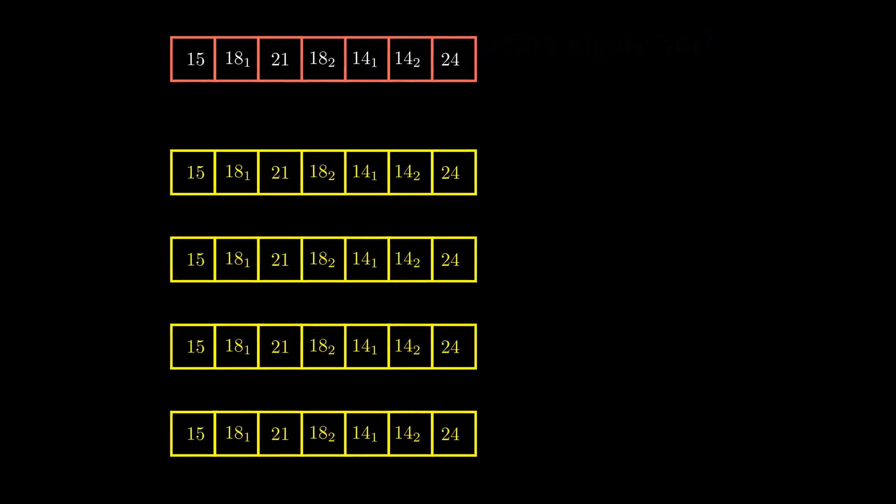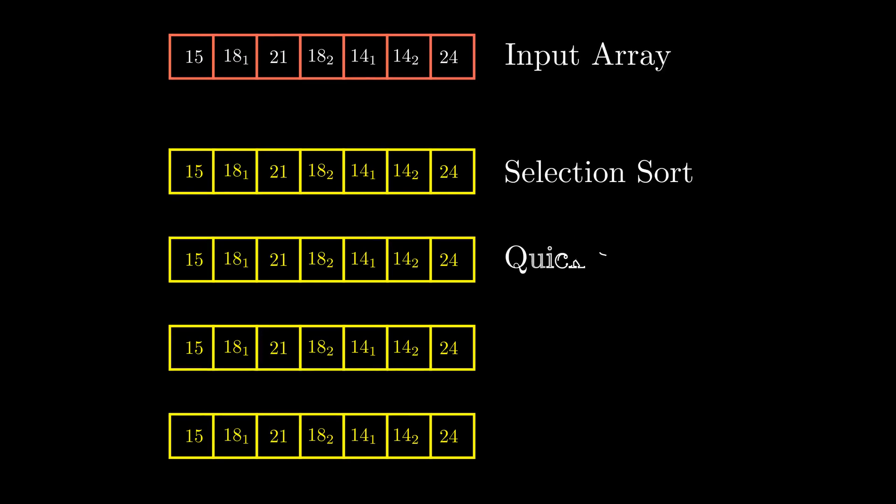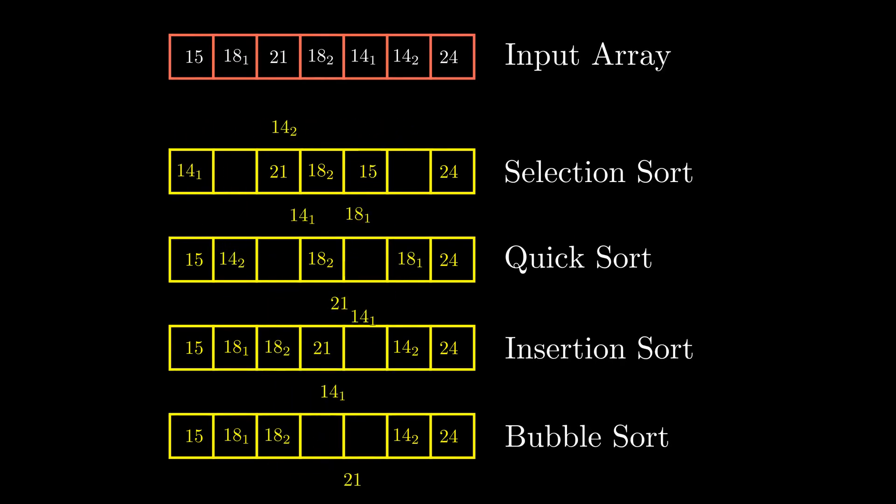To distinguish between the two 18s, let's call them 18₁ and 18₂. And to distinguish between two 14s, let's call them 14₁ and 14₂. Once again, let's run selection sort, quick sort, insertion sort, and bubble sort on this array.